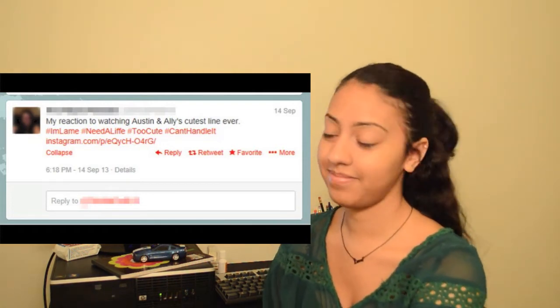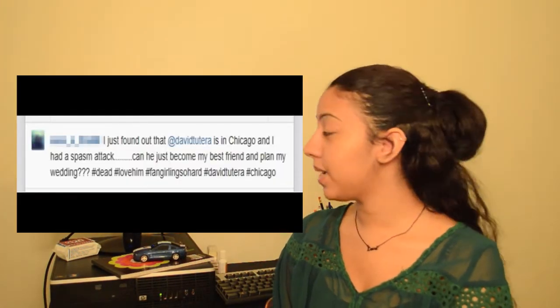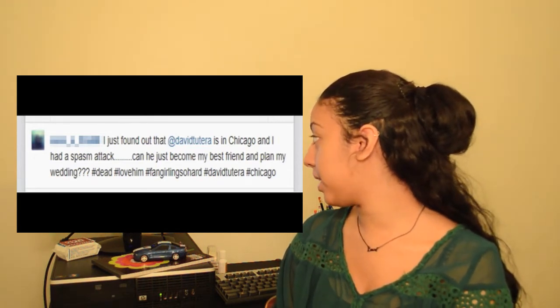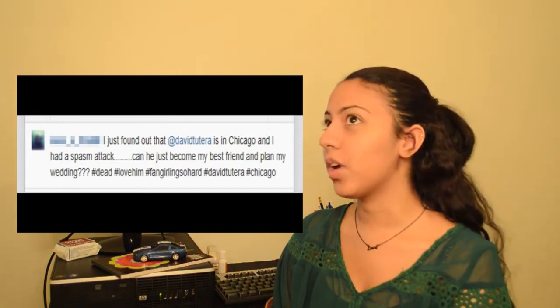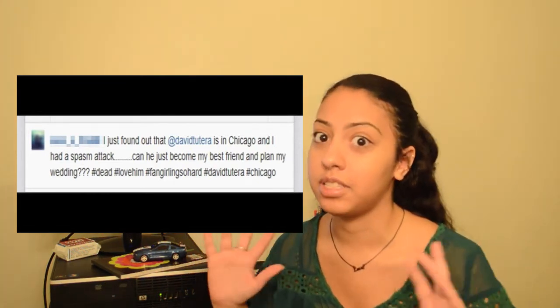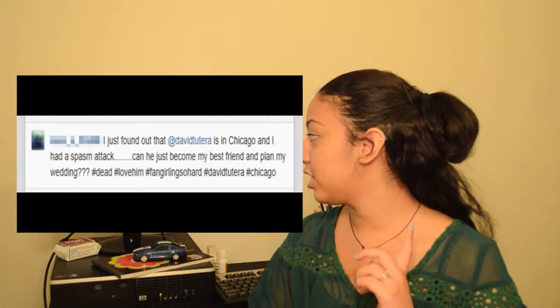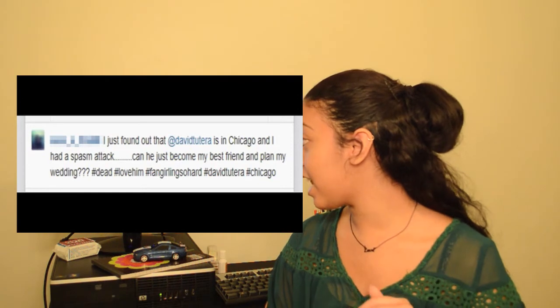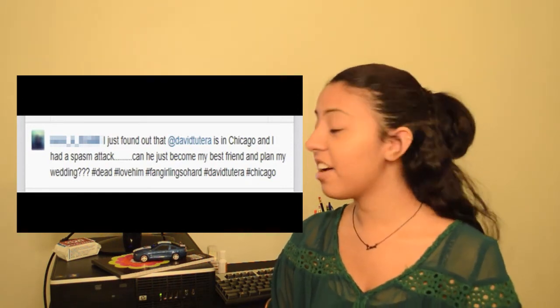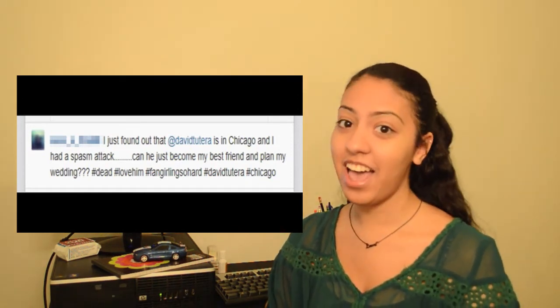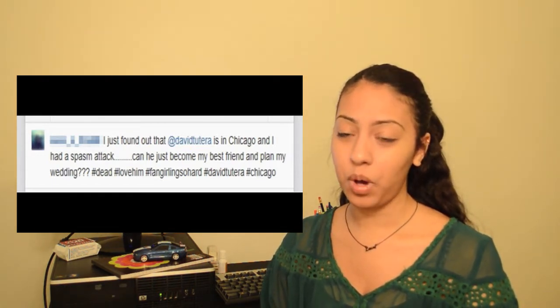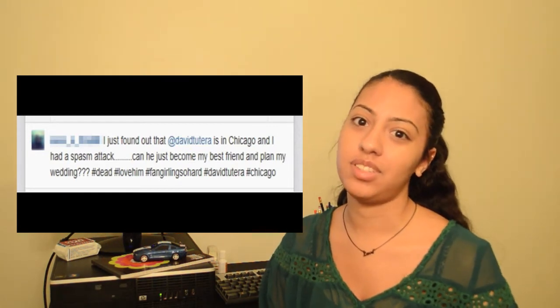Now this one is from Instagram and it says 'I just found out that David Tutera is in Chicago and I had a spasm attack. Can he just become my best friend and plan my wedding?' Which every girl you know dreams of because David Tutera is amazing. But she then hashtagged it with multiple hashtags saying hashtag dead hashtag love him hashtag fangirling so hard hashtag David Tutera hashtag Chicago. Why would you hashtag David Tutera when you tag David Tutera? I don't get it.